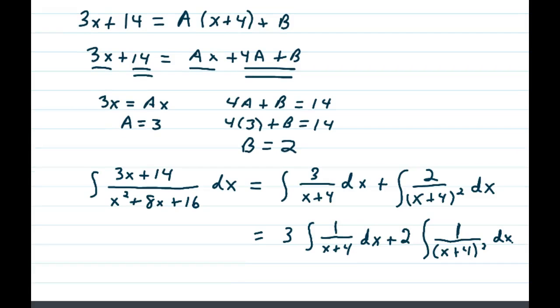So now we know that the integral of 3x plus 14 over x squared plus 8x plus 16 can be broken down into two distinct integrals, 3 over x plus 4 plus 2 over x plus 4 quantity squared.